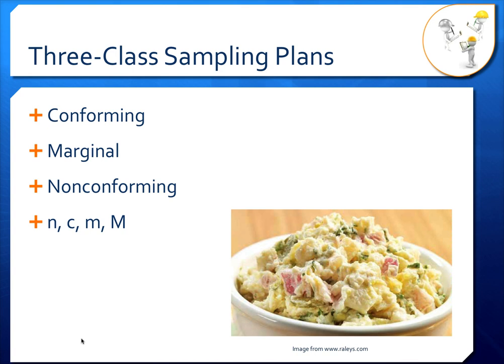You really don't want to go above big M — you want to stay below little m. But if you have something between little m and big M, that's a marginal sample. It means something probably went a little bit wrong in the process, but it's not quite serious enough to automatically reject. That's a three-class sampling plan.